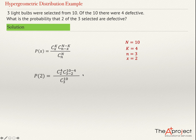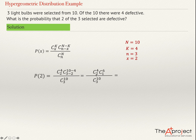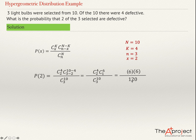This will equal C(4,2) times C(6,1) divided by C(10,3). Use your calculator to compute all of them. C(4,2) equals 6. C(6,1) equals 6. And C(10,3) from my calculator is 120. So, 6 times 6 divided by 120 gives an answer of 0.3. That is the way we solve a problem of a hypergeometric distribution.